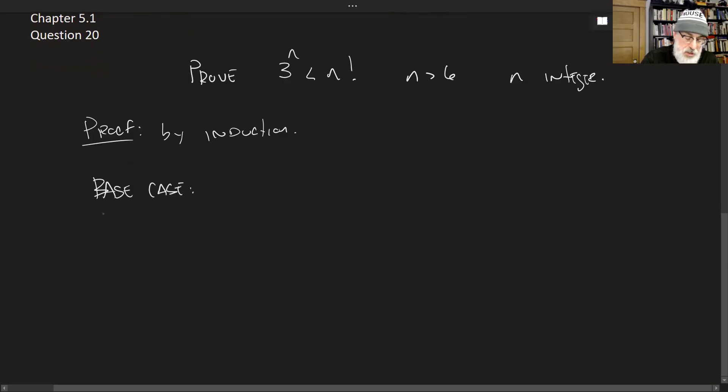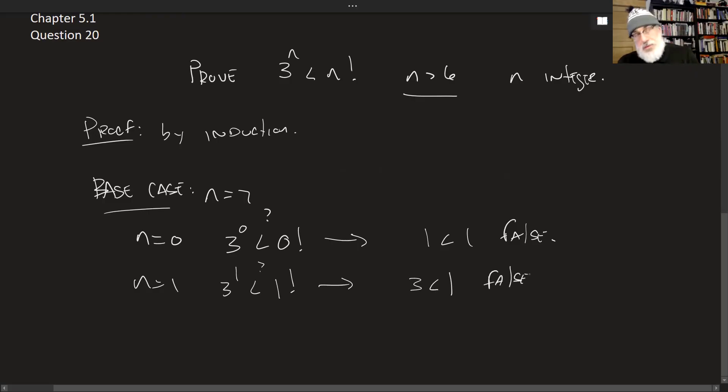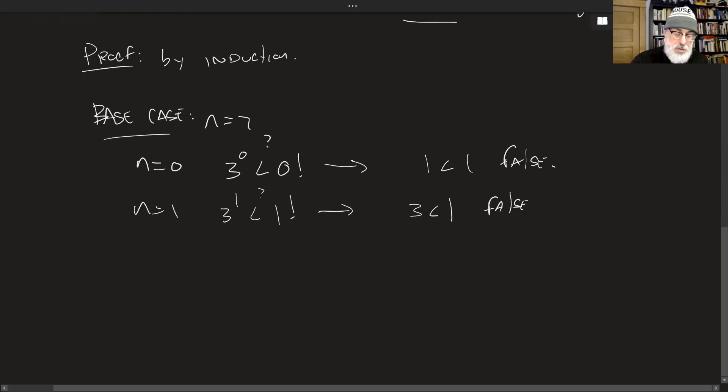We have a base case. We want to show that the statement holds for the first term. Now notice here we start at 7. So n is greater than 6. So we need to check that n equals 7 holds. Now let's look at n as 0 just to see what happens here. So is it true that 3 raised to 0 is less than 0 factorial? Recall that 0 factorial is 1. So what we're saying here is 1 is less than 1 is false. So it doesn't hold for 0. Let's try 1. 3 raised to 1 is less than 1 factorial. Well, 3 raised to 1 is 1. 1 factorial is 1. This is false. So you can see there's a reason we're starting at 7. It's just not arbitrary.